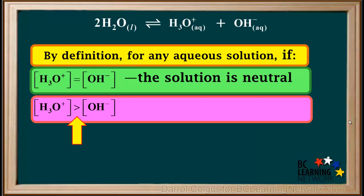And if the concentration of hydronium is greater than the concentration of hydroxide, the solution is said to be acidic.